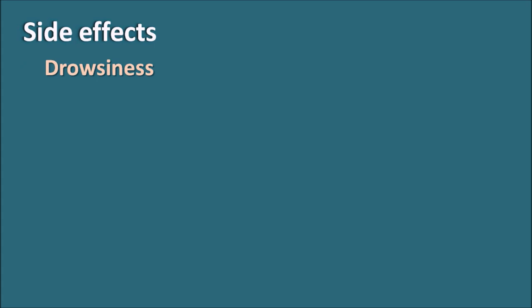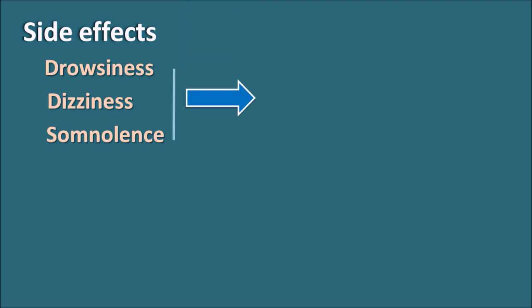Now let us see the side effects of pregabalin. As this drug acts on the central nervous system, the main side effects are related to the CNS — it can produce drowsiness, dizziness, and somnolence. These are the central side effects produced by pregabalin. That is why pregabalin should not be given along with CNS depressants, which would further increase the drowsiness and dizziness in patients.